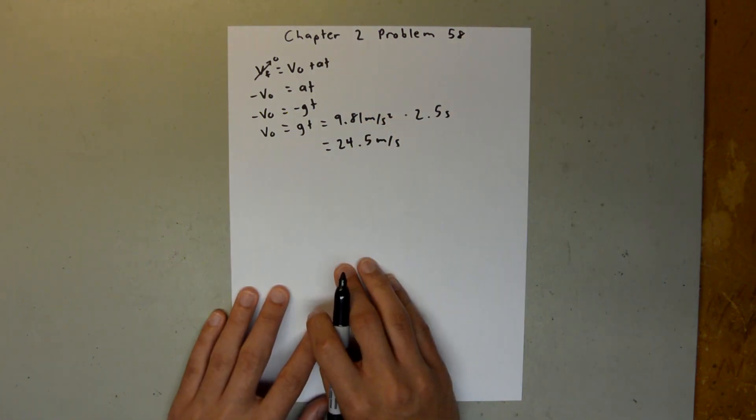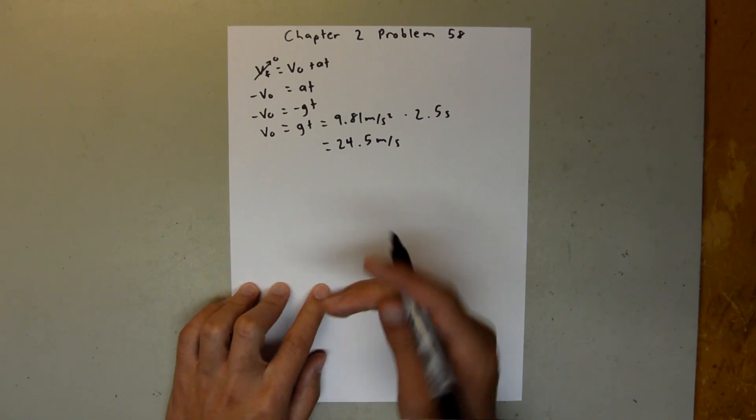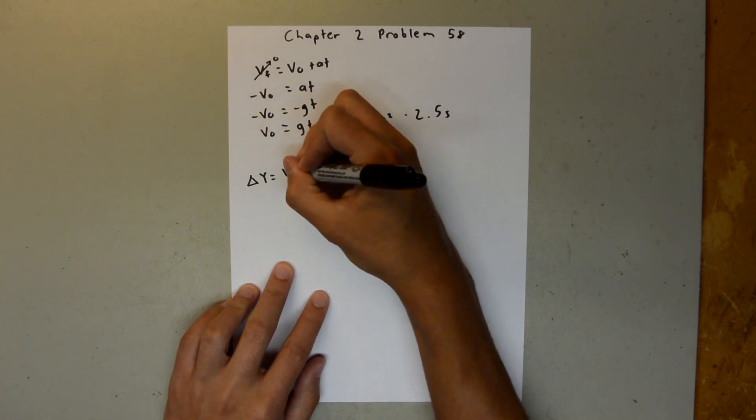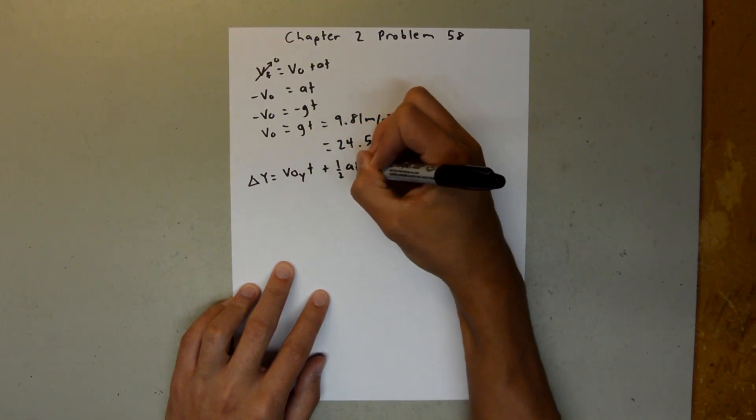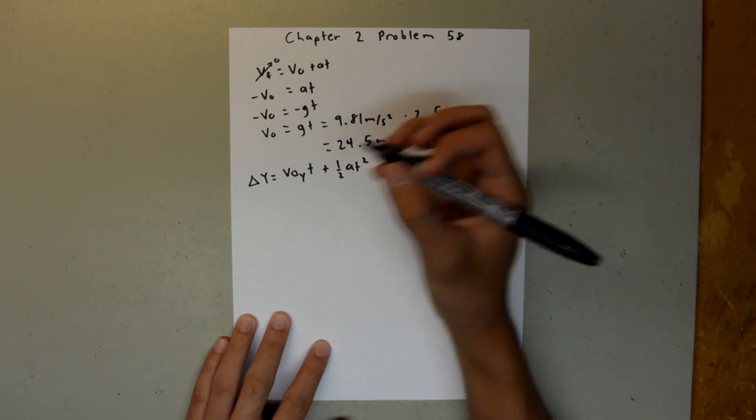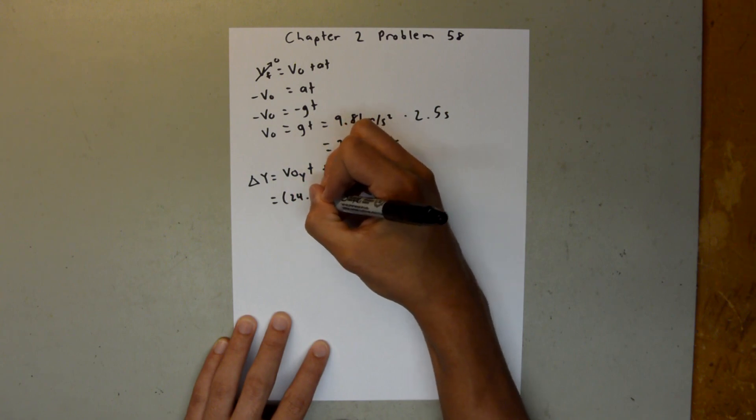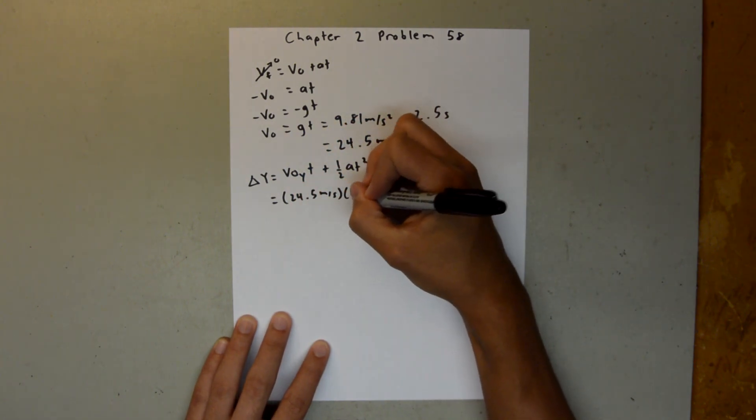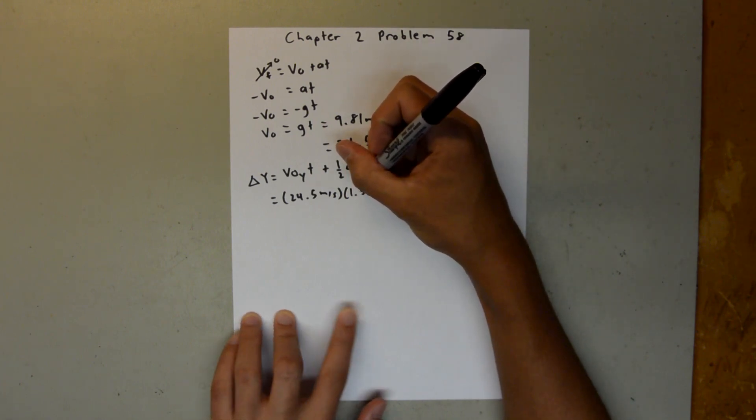Now we need to solve for the displacement in the y direction given a specific time. We can do that using another kinematics equation: delta y equals the initial velocity in the y times t plus one-half at squared. We have all those values, so we can just directly plug them in. Our initial velocity we just found here is 24.5 meters per second times our time, which we were given in the problem, 1.5 seconds. That's the time when the rock crosses the top of the building.